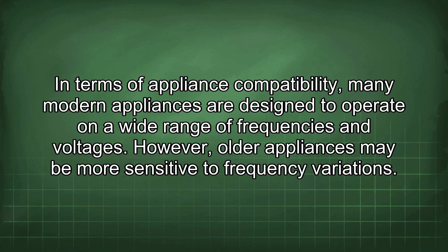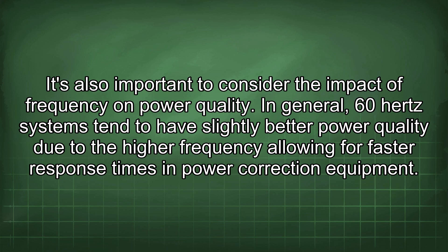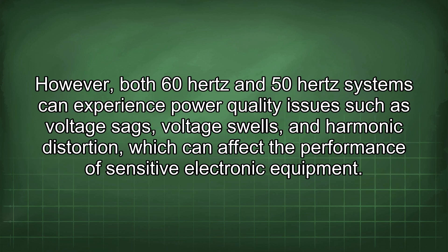In terms of appliance compatibility, many modern appliances are designed to operate on a wide range of frequencies and voltages. However, older appliances may be more sensitive to frequency variations. For example, a clock designed for 60Hz will run slower on a 50Hz system, while a clock designed for 50Hz will run faster on a 60Hz system. Appliances with timers or other frequency-dependent components may not function correctly on the wrong frequency. In general, 60Hz systems tend to have slightly better power quality due to higher frequency allowing faster response times, though both systems can experience voltage sags, voltage swells, and harmonic distortion.